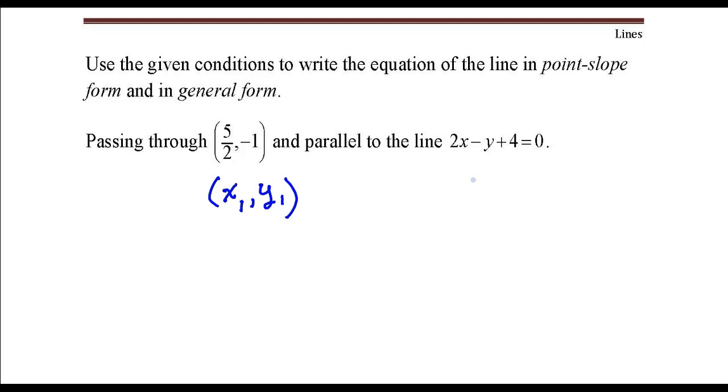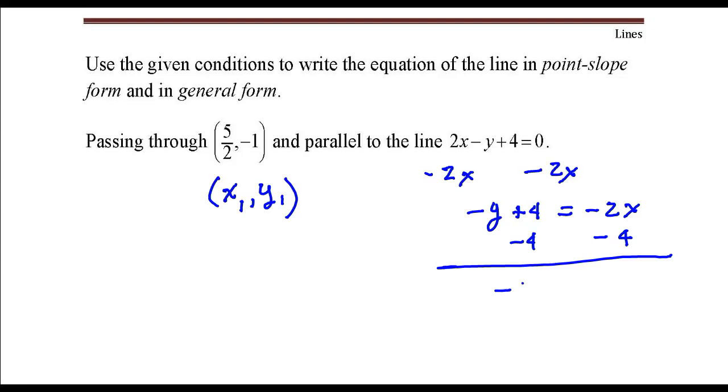So I'll go ahead and solve this for y. Let me subtract 2x from both sides first. So that leaves me with negative y plus 4 equals negative 2x. Then subtract 4 from both sides. So that's negative y equals negative 2x minus 4.